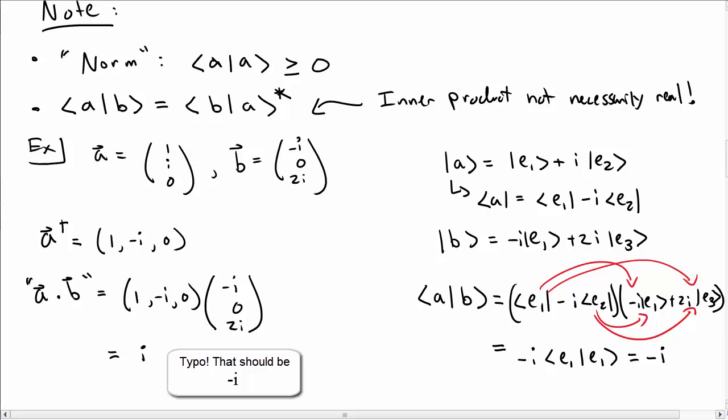So that's the idea behind inner products and Dirac notation, and how that relates to vectors. It's just a new way of writing vectors in a slightly more compact notation.